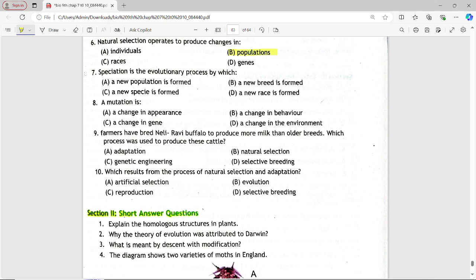Next MCQ is, speciation is the evolutionary process by which. Options are: a new population is formed, a new breed is formed, a new species is formed, a new race is formed. Answer is option C, a new species is formed.